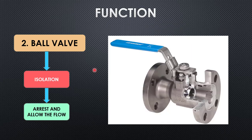The second valve is the ball valve, which is also used for isolation — the same purpose as the gate valve. A ball valve has a ball with a hole inside. When the lever is turned, the ball rotates so the hole is perpendicular to the flow, arresting it. Turning the lever again in the anticlockwise direction opens the flow.